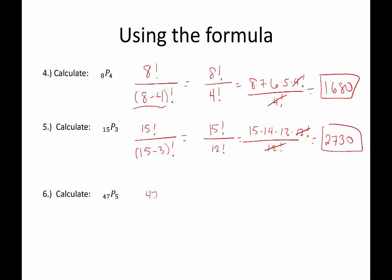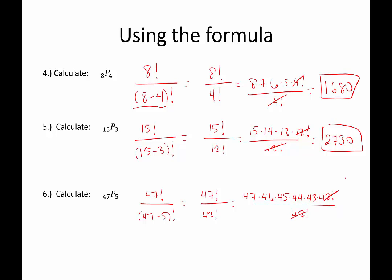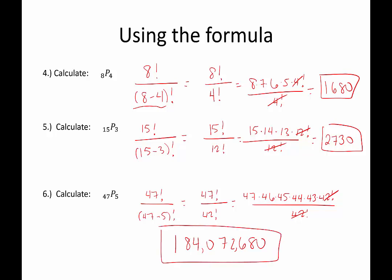Last one: 47 permuted 5 ways gives us 47 factorial over (47 minus 5) factorial, which is 47 factorial over 42 factorial. You can see these get really big. That's 47 times 46 times 45 times 44 times 43 times 42 factorial, divided by 42 factorial — those cancel, leaving 47 times 46 times 45 times 44 times 43. That gives us 184,072,680. That is a big number — good thing we used a calculator.